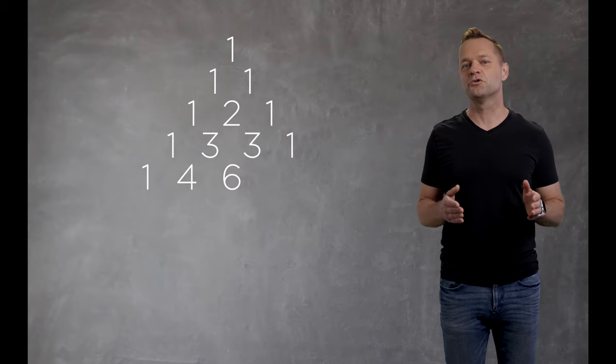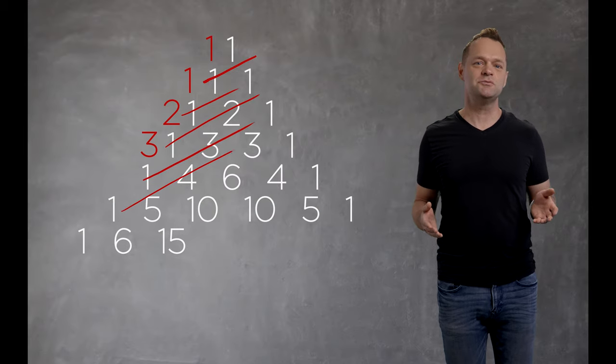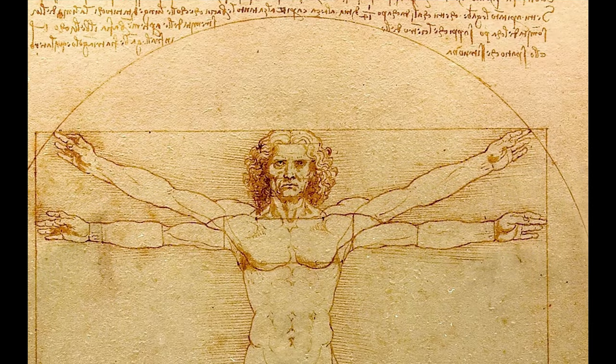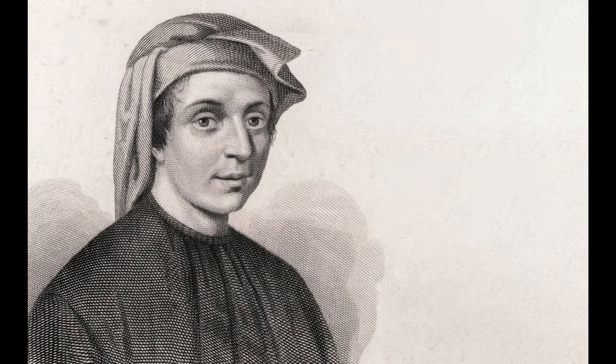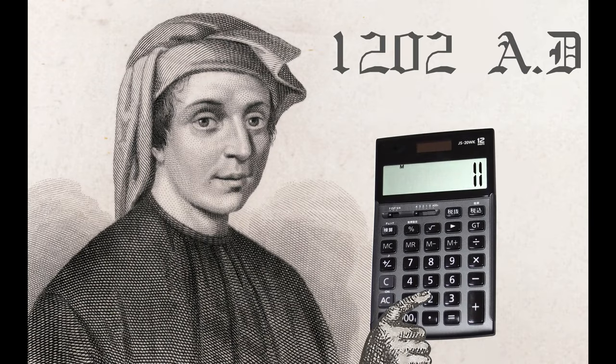First, let me explain what the golden ratio is, or as da Vinci would have called it, the divine proportions. The easiest way to understand the golden ratio is through a sequence of numbers called the Fibonacci sequence, introduced in the modern world by Italian mathematician Leonardo of Pisa.